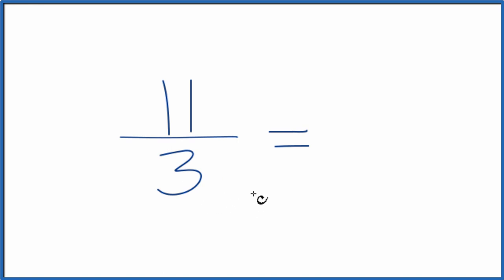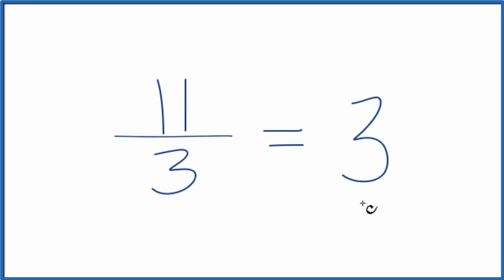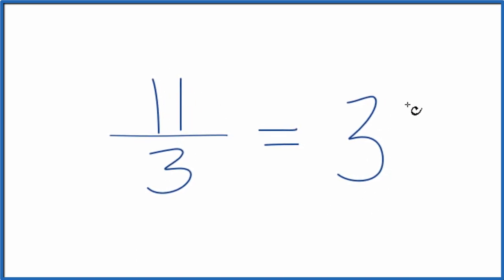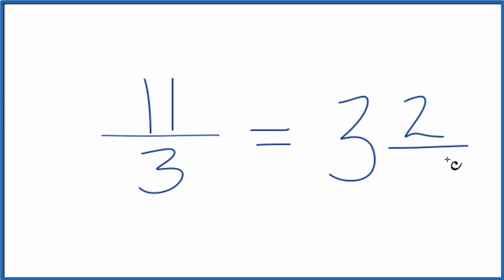We could change this to a mixed number. Right now it's an improper fraction because the numerator is larger than the denominator. So if we do that, we would divide 3 into 11. So 3 times 3, that's 9. And then we'd have 2 left over.